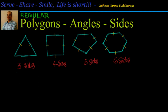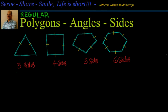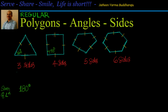Let's observe the pattern here. Based on that we will derive formulas for the sum of interior angles and the exterior angle of an n-sided polygon. For 3 sides, the sum of angles is 180 degrees — we know that because the sum of angles of a triangle is 180 degrees, and each angle equals 60 degrees. For 4 sides, if it's a square, each angle is 90 degrees, so 4 × 90 gives a sum of 360 degrees.